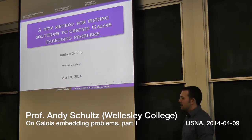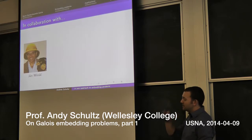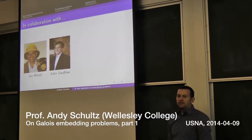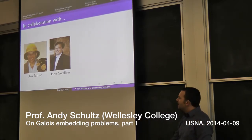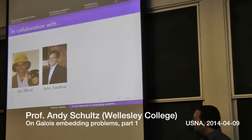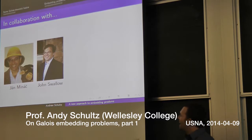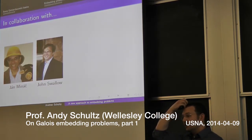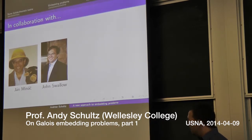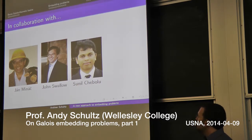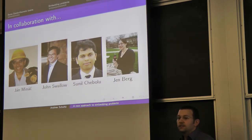What I'm going to be talking about today is an amalgamation of a number of projects. The two primary collaborators are Jan Minach and John Swallow. Jan is a really free-spirited mathematician — this monkey is somehow used in his number theory class to help prove theorems. John Swallow is now a provost at Sewanee, which is why his headshot looks very professional. Sunil Chivolo was a postdoc who worked with Jan, now at Northern Illinois, and Jen Berg was an undergraduate at the University of Illinois when I was a postdoc there.